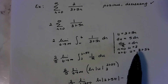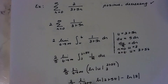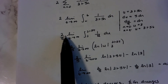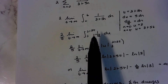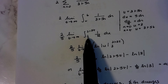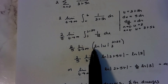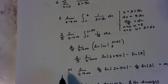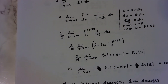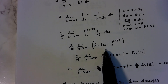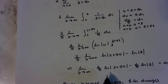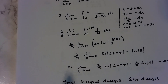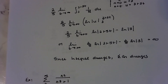Pulling the two-fifths out, I have the integral from 3 to 3 plus 5t of 1 over u du, which is the natural log of u evaluated from 3 to 3 plus 5t. Distributing the two-fifths back in, when I plug in infinity I get infinity. Since this integral diverges, the original series also diverges.